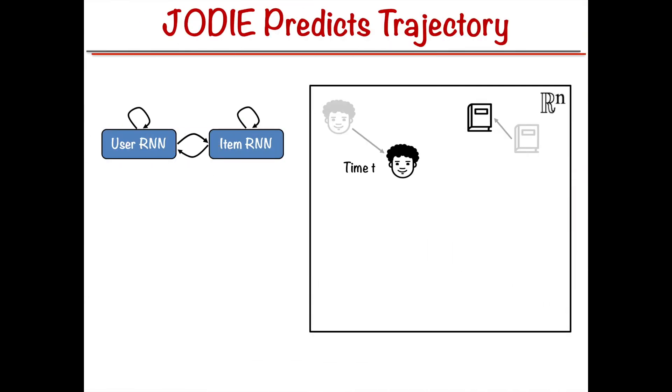Therefore, we create JODI, a mutually coupled recurrent neural network model that learns to generate embedding trajectories of users and items from their interactions. JODI trains two RNNs, one for users and another for items, which update the embedding of user and item using each other's embeddings.